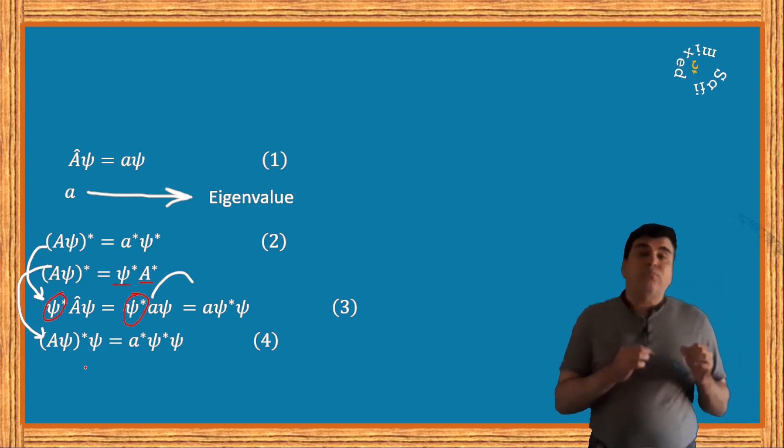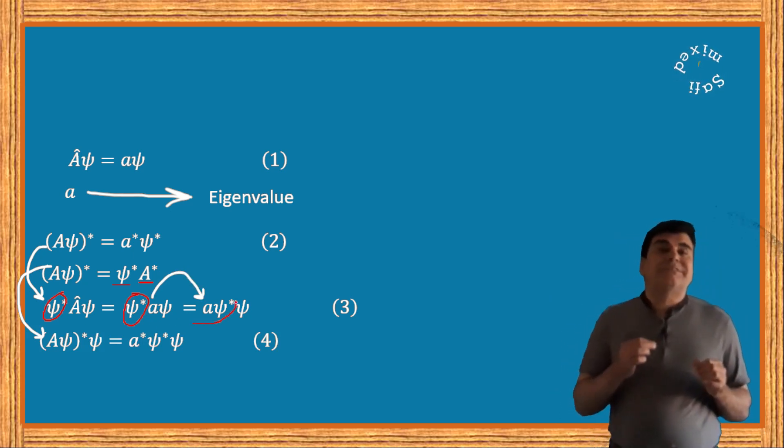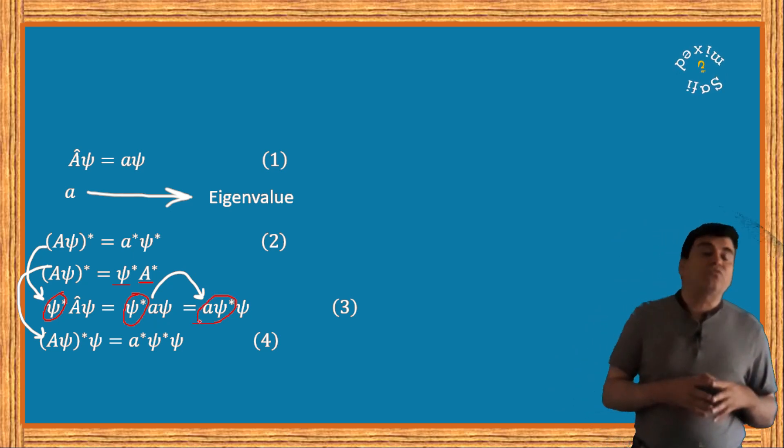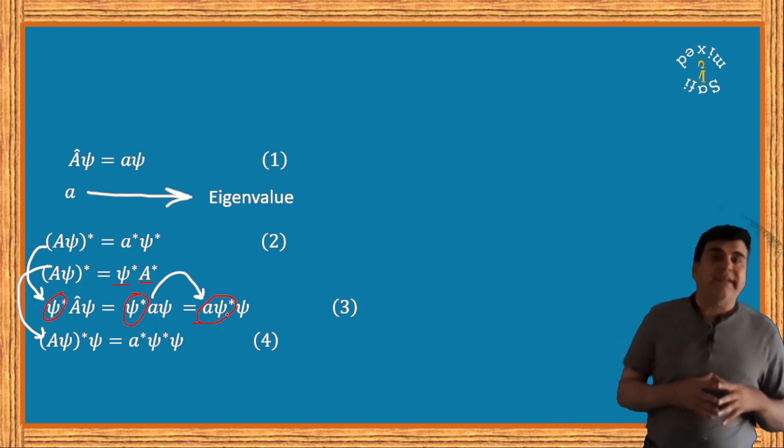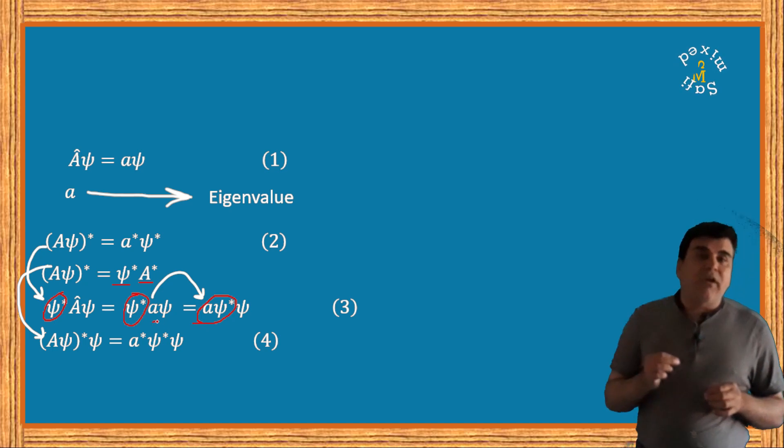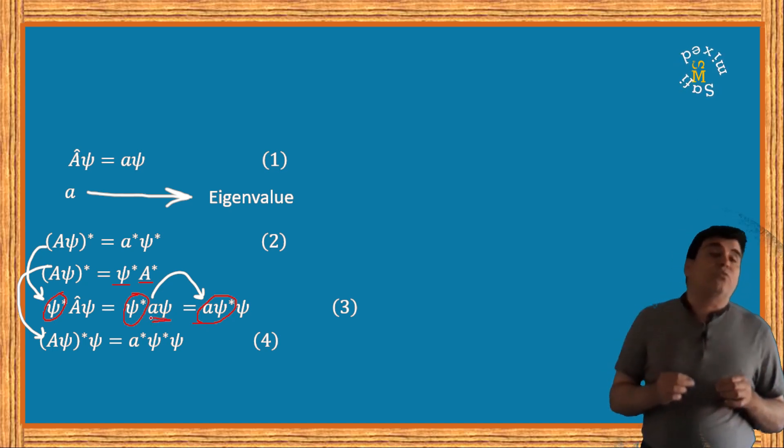Note that to the rightmost of equation 3 I have changed the position of small a with respect to the wave function ψ*. This is an allowed operation for numbers, whether real or complex.